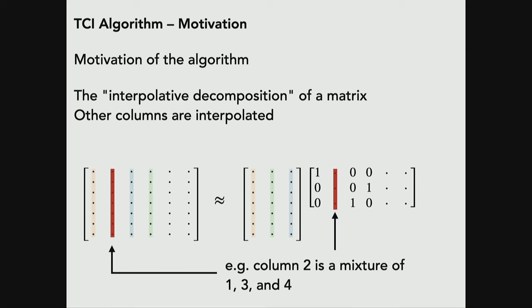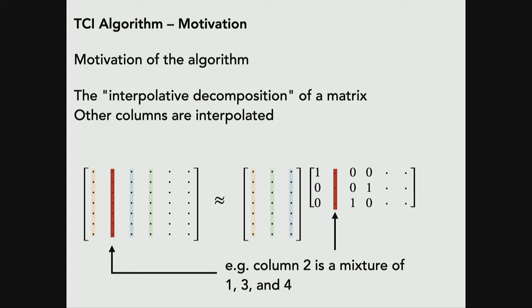Column two, for example, is just some arbitrary mixture of columns one, three, and four of the original matrix. That's why it's called interpolative — we're interpolating all the other columns. Imagine this original matrix having thousands of columns; we could interpolate all those thousands of columns with just three of them. The number might not be three — it might be different — but that's the idea.